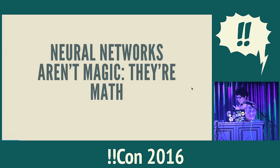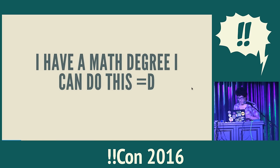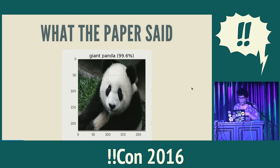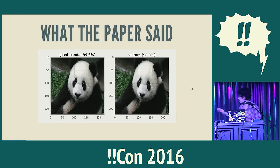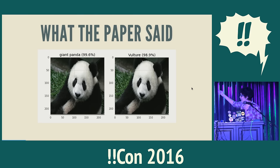One of the things I learned is that neural networks are in fact math, which we're going to talk a little about. I have a math degree, which made me slightly more confident that I could maybe do some of this. What the paper said was: neural networks sometimes work really well — they'll identify a giant panda. But sometimes you can make a picture which looks just like a giant panda, but the neural network thinks it's a vulture, with like 99% certainty. And it kind of outlined how to do this.